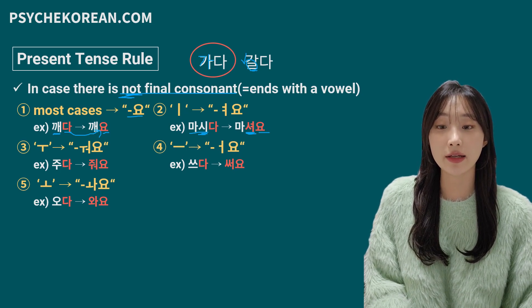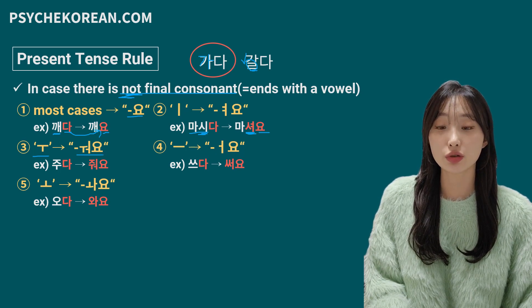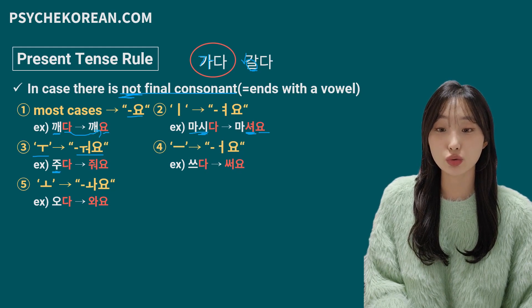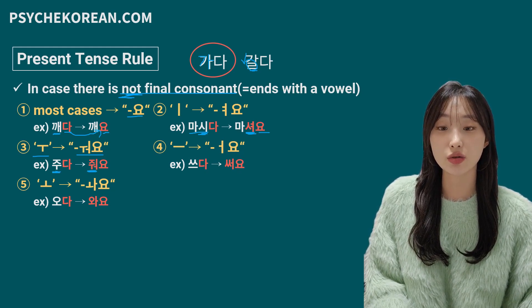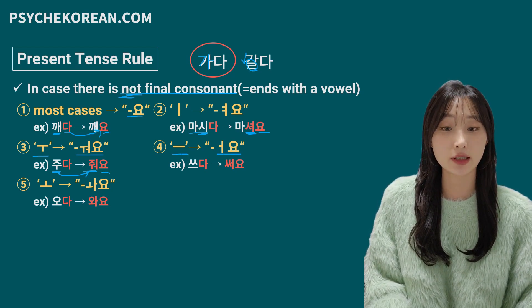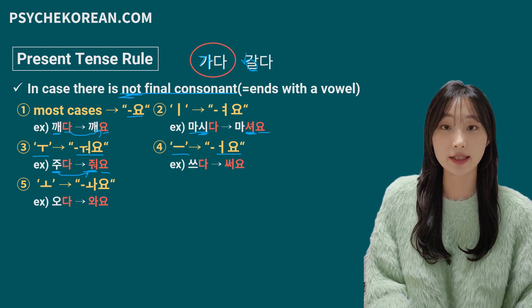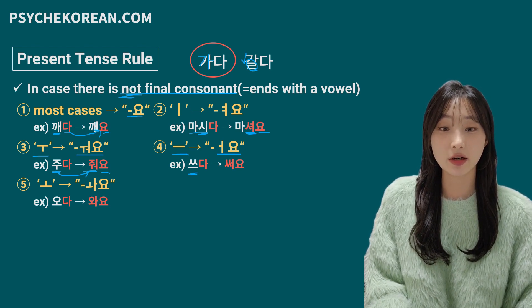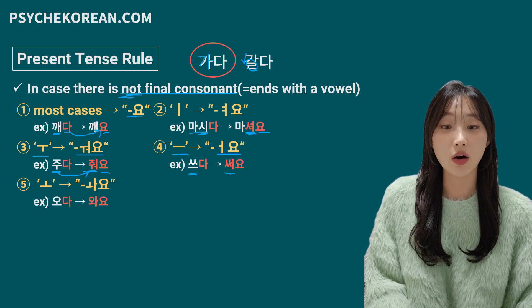If the word stem ends with 우 vowel, 워요 is added. For example, 주다, which means 'give' — the vowel is 우, so 우 is changed to 워요, giving 줘요. If the vowel is 으, 어요 is added. For example, 쓰다, which means 'write' — so 써요 is the answer.